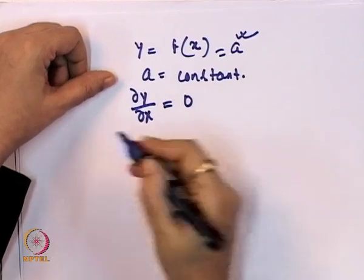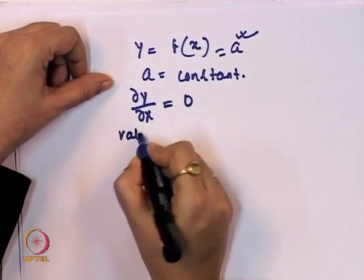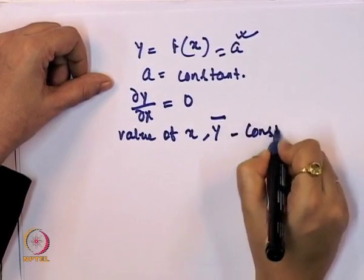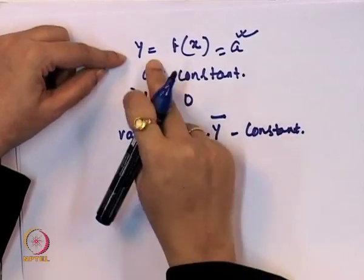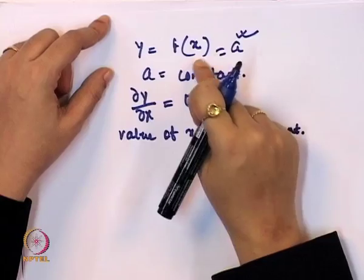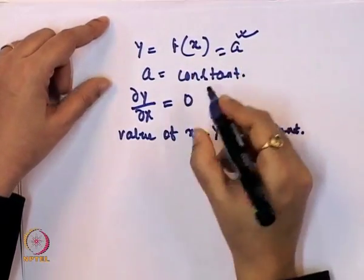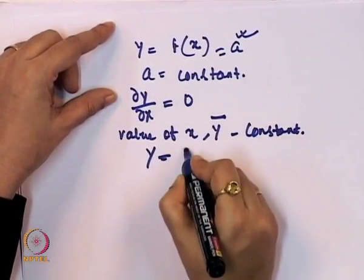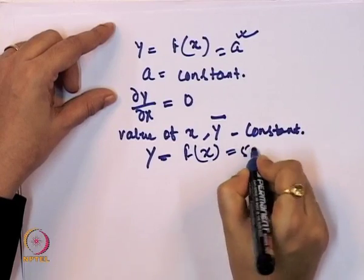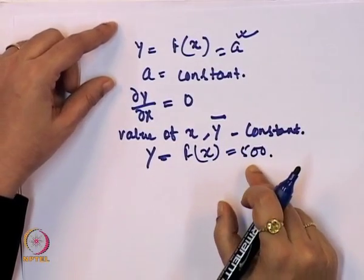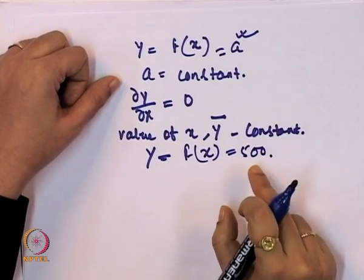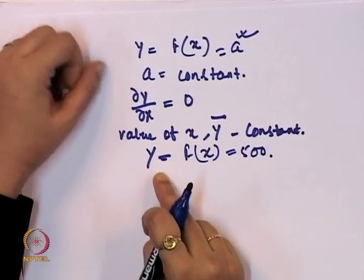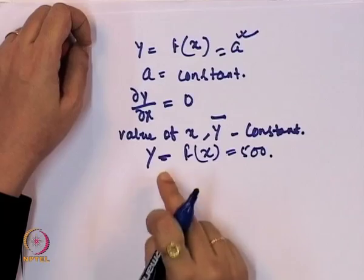Whatever the value of x, y remains constant — there is no change in y because y is represented as a constant function. For example, if y = f(x) = 500, this is the value of the intercept, not the slope. In this case, whatever the value of x, y remains constant. This is the derivative of a constant function.